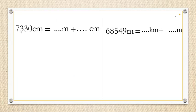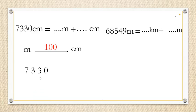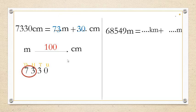Here we have 7,330 centimeters and 1, to be expressed as meters and centimeters. We know that 1 meter has 100 centimeters, so we look at the place value of hundreds and take any digits from that place value onward. The place values are: units, tens, hundreds, thousands. The hundreds digit is 3, so we take the digits from the hundreds place — giving us 73 — and put 73 with meters. The rest of the number goes with centimeters.